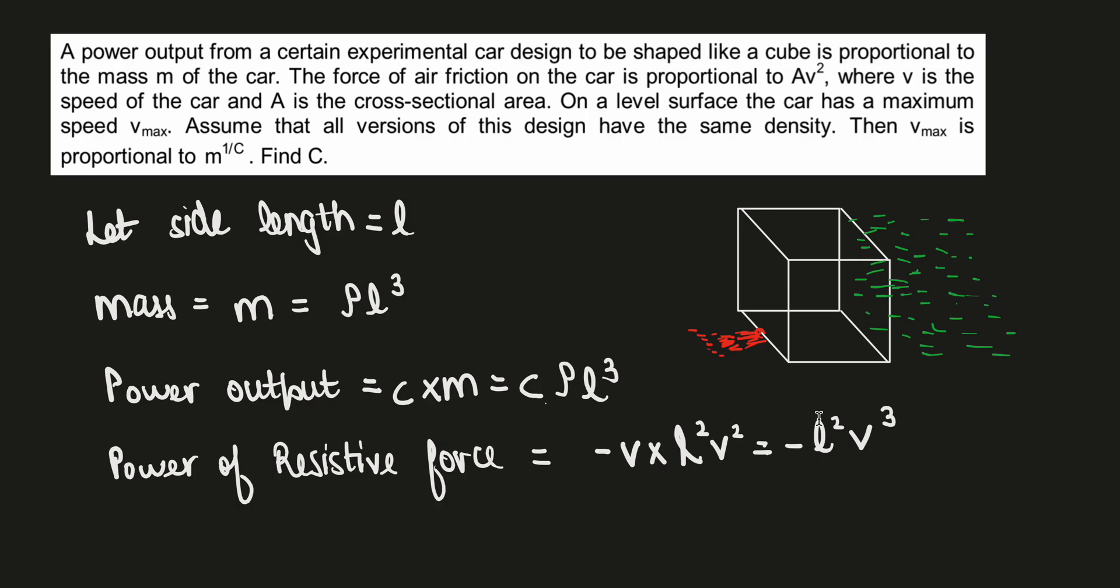Now we have to find out the maximum velocity that this experimental car can attain. We have to assume that any such car has the same density, which means any such model is being made with the same material. We need to find what would be the max velocity and its proportionality with the mass.